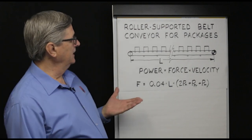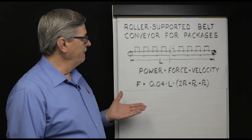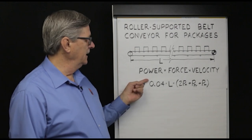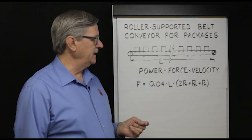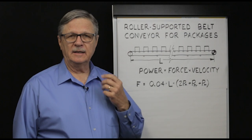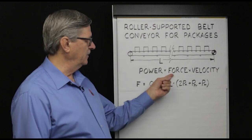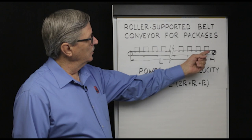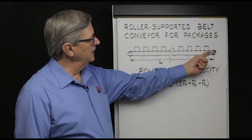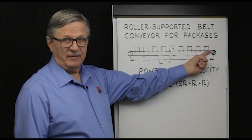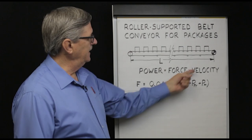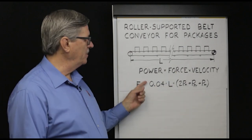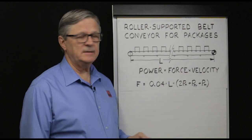How do we calculate required power and required belt pull? We know that power equals force times velocity. In conveyor belt terminology, force is belt pull — the tension at the immediate vicinity of the drive pulley — and velocity is belt speed. So required power equals belt pull times belt speed.